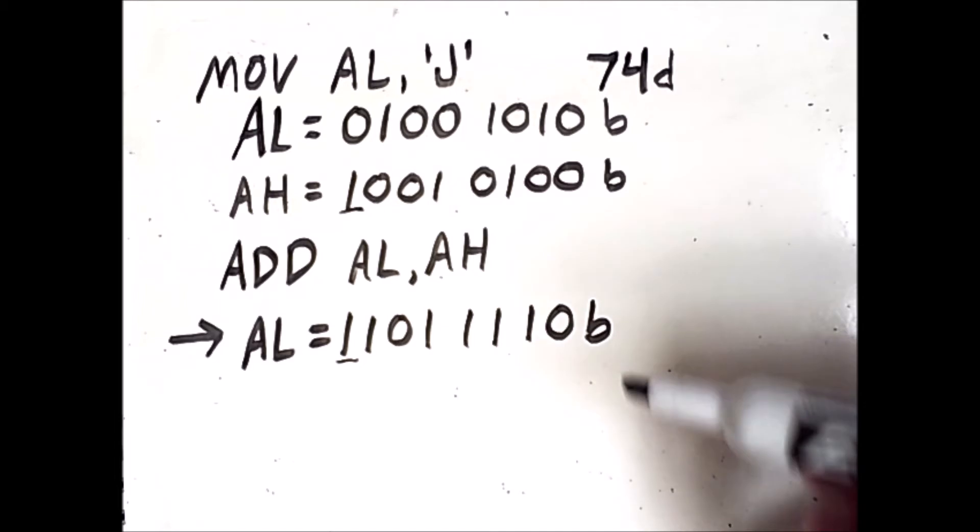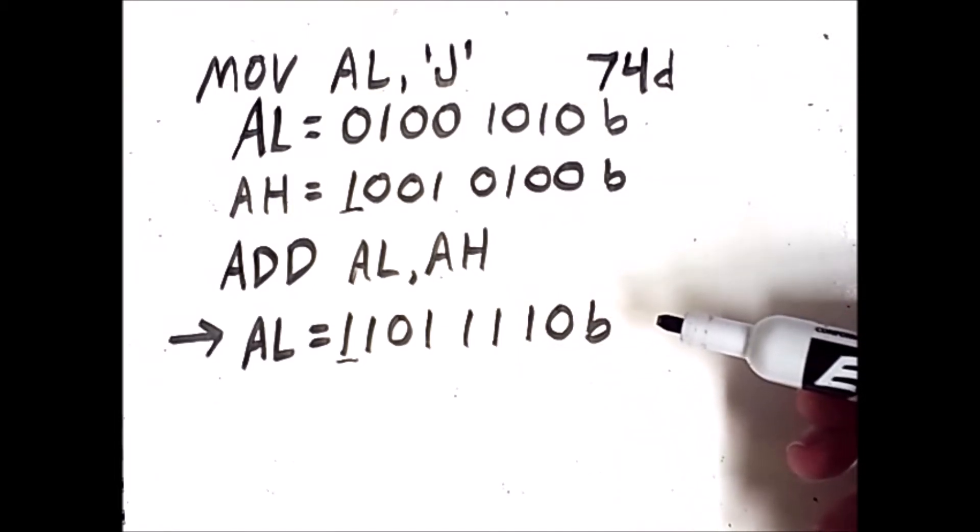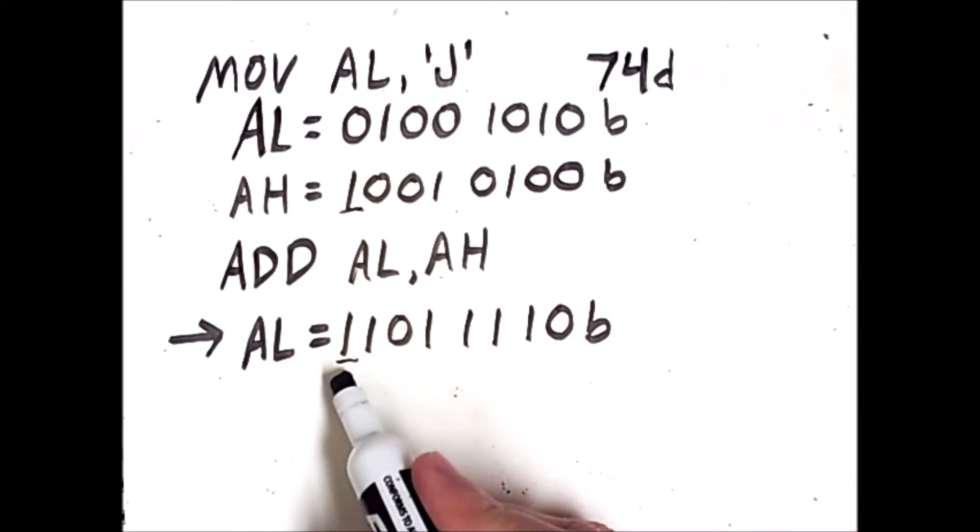Similarly, this result here could be interpreted as an unsigned value or a signed value. Does this 1 mean the result is negative, or does this 1 simply mean that the result is a larger number? It's all up to how you choose to interpret it. And in some cases, it's important to use the correct instruction to fit your intended interpretation of the values.